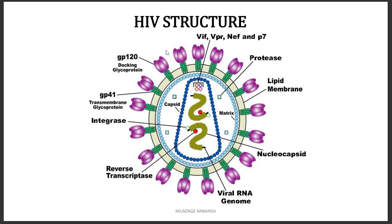The other part is GP120, which is on the outside and functions to bind to receptors on either macrophages or T lymphocytes. GP41 is embedded in the envelope. Inside, we have the protein matrix layer just beneath the envelope.